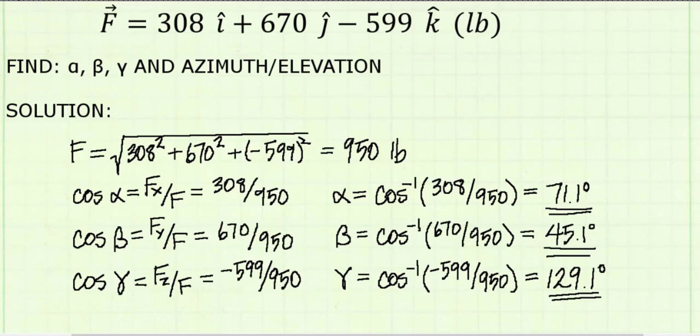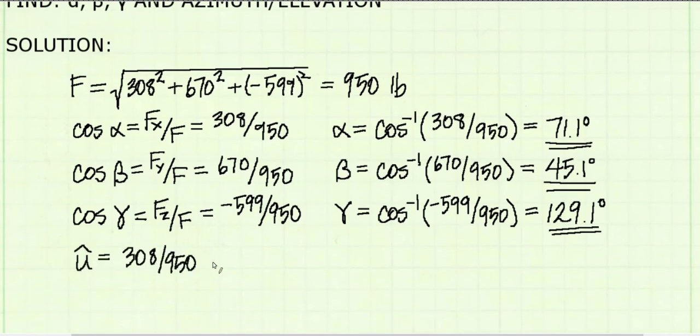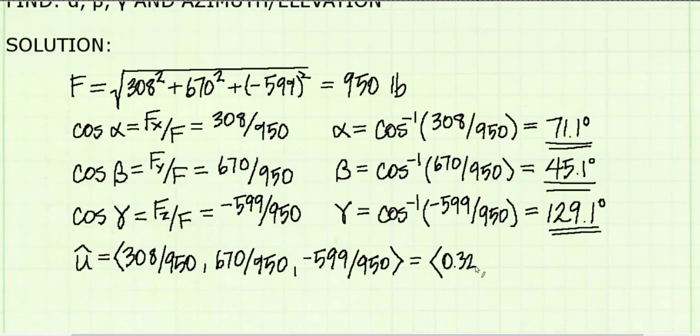We can check our answer using one of the vector visualization tools that are made available to students in the course. But first I need to find my unit vector. I find my unit vector by dividing the x, y, and z terms, or i, j, and k terms, by the magnitude. I'm using the shorthand notation instead of writing out i, j, and k. So here's the unit vector I'm going to use in the tool.